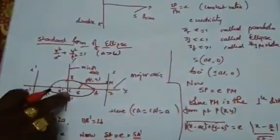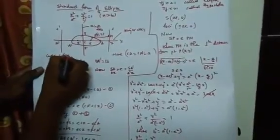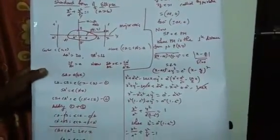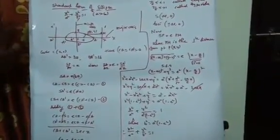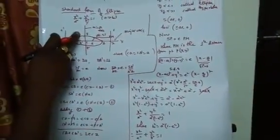Therefore the standard equation of ellipse is x squared by a squared plus y squared by b squared equals 1. From b squared equals a squared minus a squared e squared, we get e equals root over (a squared minus b squared) divided by a squared, valid for a greater than b greater than 0, with center at origin. Various forms of the ellipse, including ellipse on the Y axis, will be seen in further cases. Thank you.